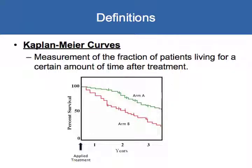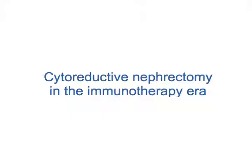Kaplan-Meier curves also came up a lot today. Simply put, they measure the fraction of patients alive for a certain amount of time after treatment. At time zero, the treatment is applied. Two populations receive different therapies, and you look at outcomes over time — if arm A clearly has more patients alive than arm B, it suggests that therapy may be better. I'll show you some of these curves, and sometimes the differences are very significant with a wide split, and sometimes they're not, which is what raises further questions.